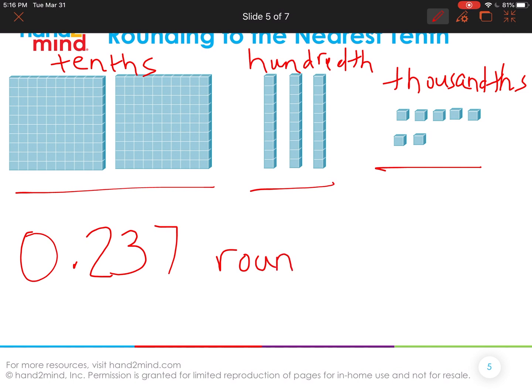So the question is, where does 0.239 round if we're trying to round to the nearest tenth? That means we want a number that only has up into the tenths. Okay. So if I look at this three, if I was to try to cover that flat, would it be worth, do we need to get another flat or do we just, is it not even half? Wouldn't even be half. So we can just get rid of those.